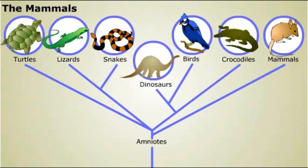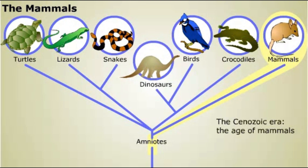An early branch on the amniote tree led to mammals, a group of vertebrates with hair or fur, which produce milk to feed their young. Mammals increased in diversity and numbers after the extinction of the dinosaurs at the end of the Cretaceous period. The Cenozoic era is sometimes called the Age of Mammals because of their dominance.